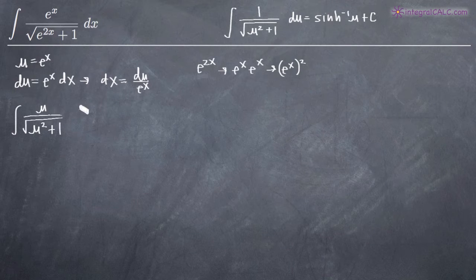And then for dx, we'll substitute and get du over e to the x. Now the goal of u substitution is to get everything in terms of u, but we still have this e to the x hanging out here.